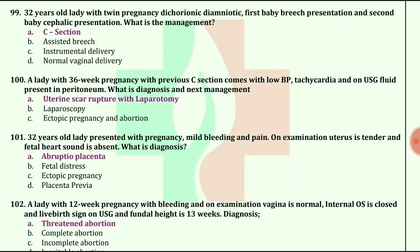A lady with 12th week pregnancy with bleeding — on examination, vagina is normal, internal os is closed, live birth sign on ultrasound, and fundal height is 13th week. What is the diagnosis? The answer is threatened abortion.